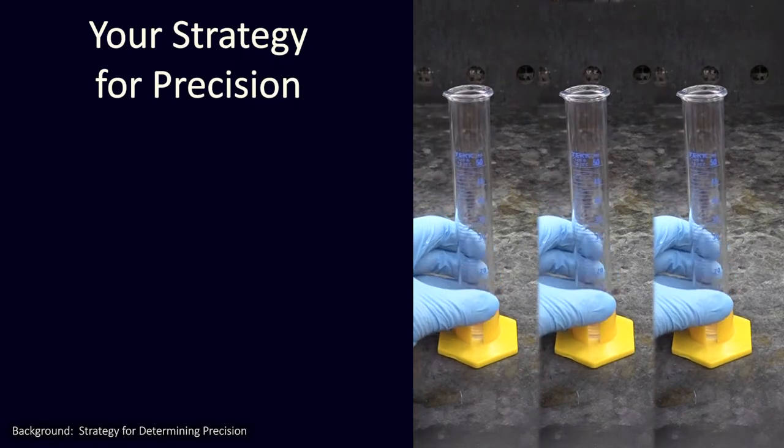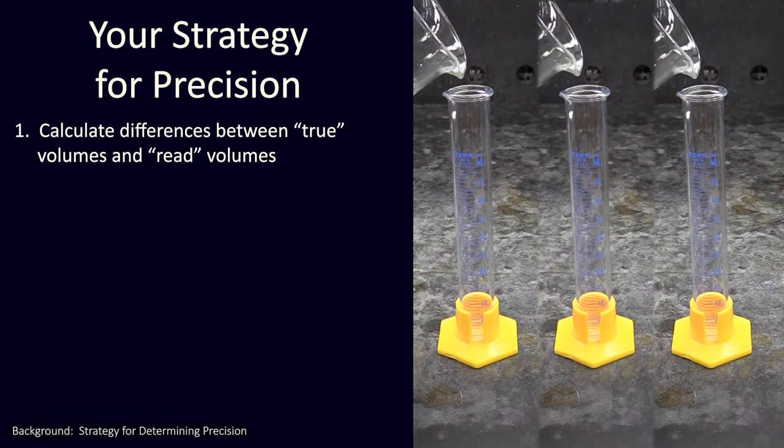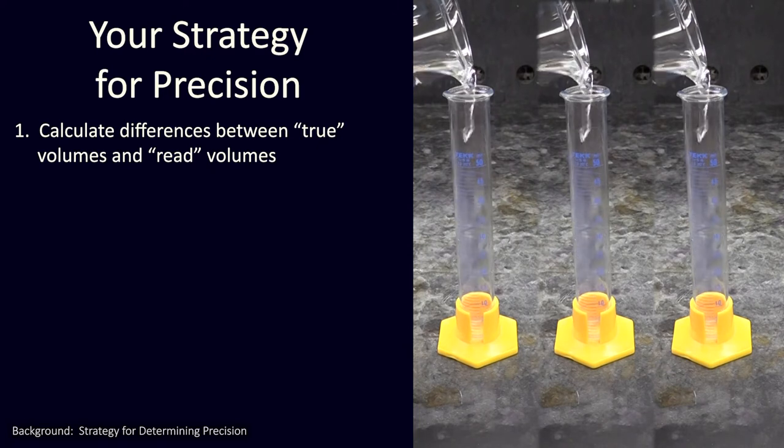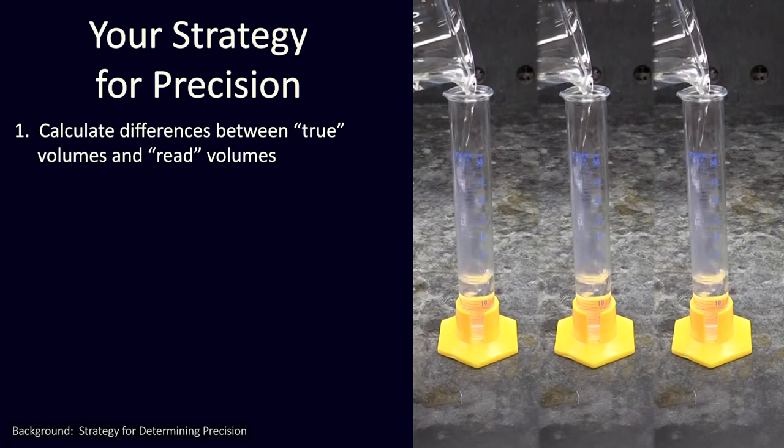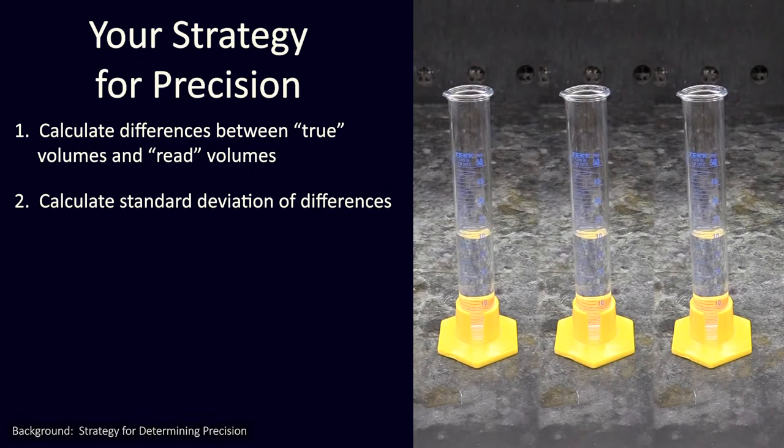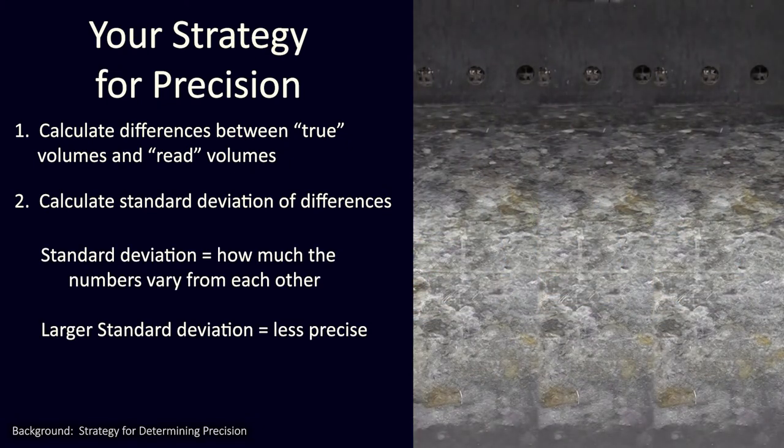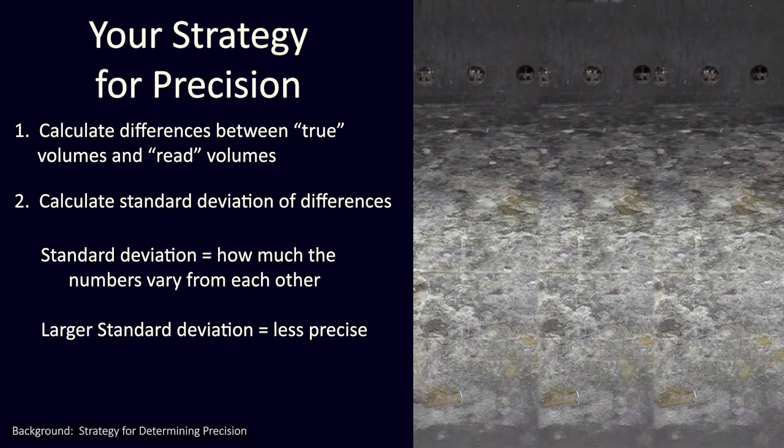In this experiment, for each of the three data sets you collect with each piece of glassware, you will calculate the difference between the actual true volume of water you measure out, and the volume you read from each piece's markings. You will then calculate the standard deviation of these differences.